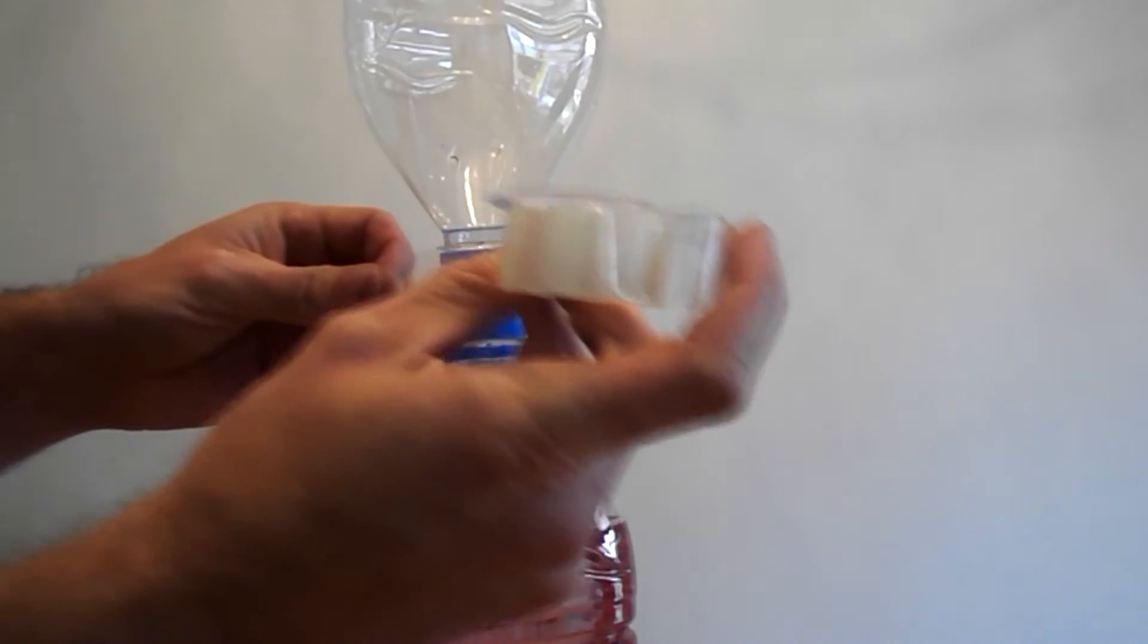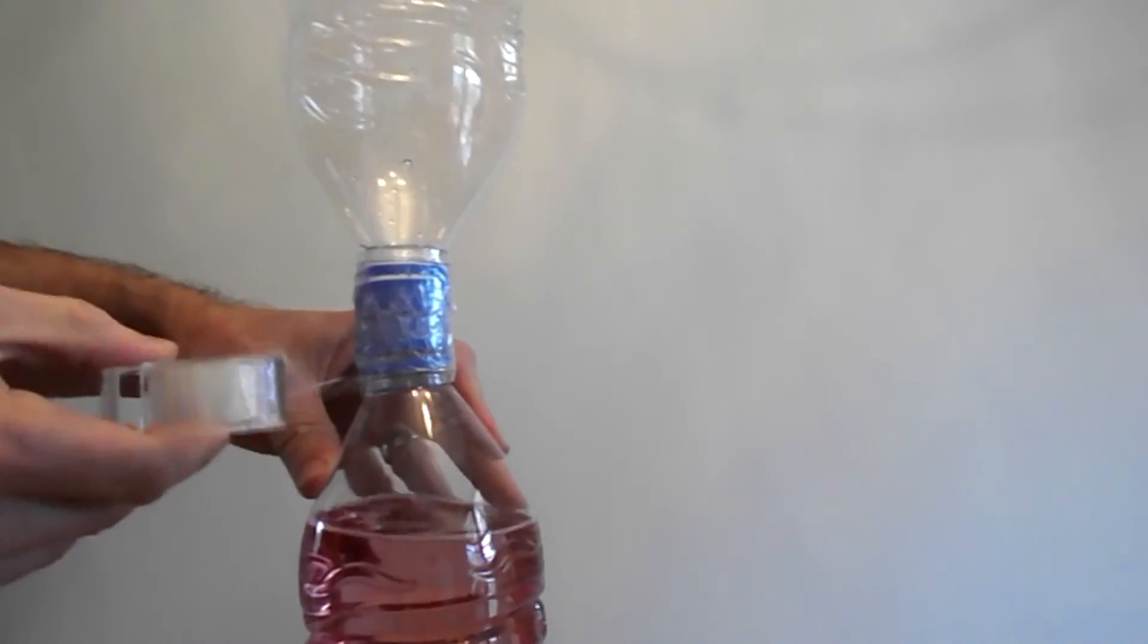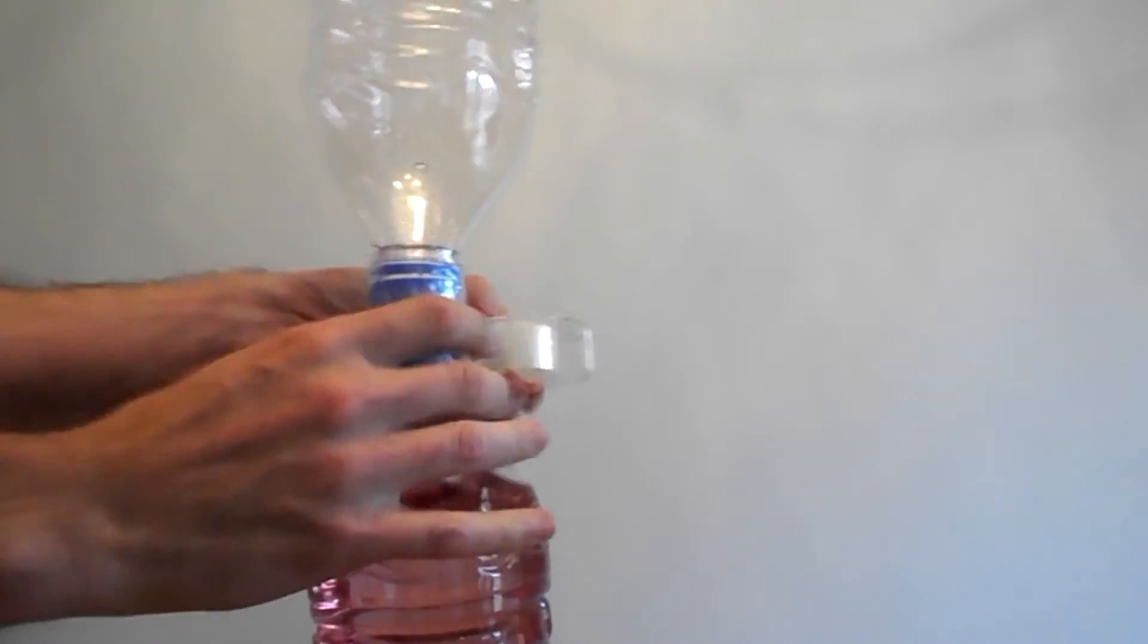To help the seal, we're going to put some tape around it. All right, turn the bottle upside down and just rotate to get the funnel going.